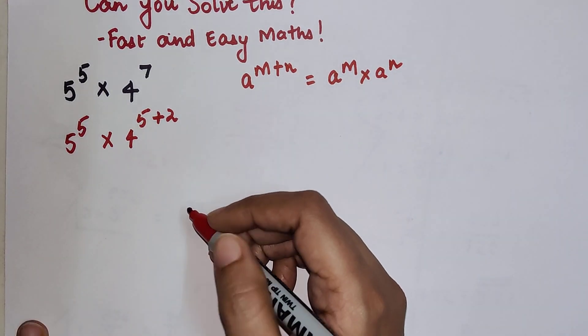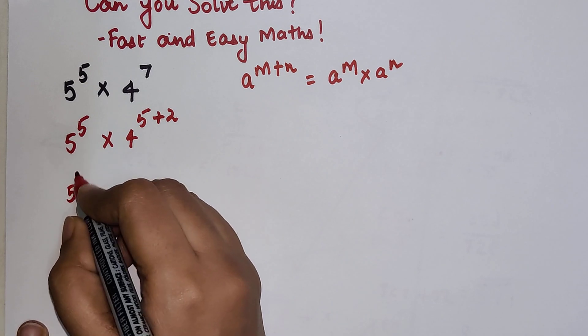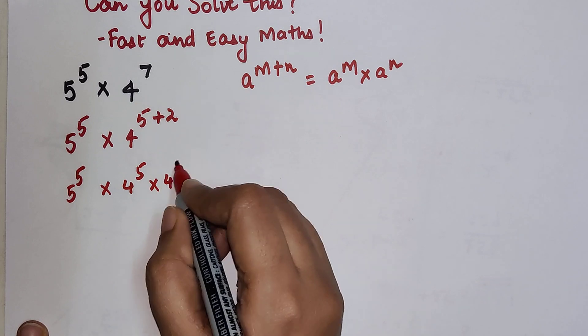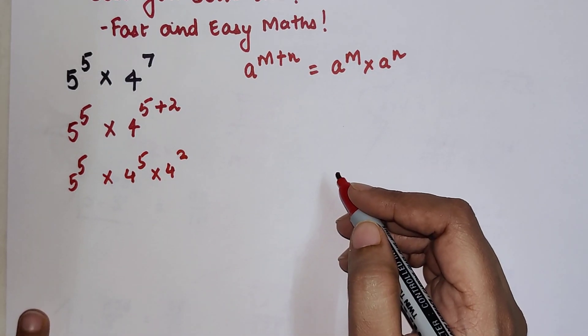So here I can write this as 5 raise to 5 into 4 raise to 5 into 4 raise to 2.